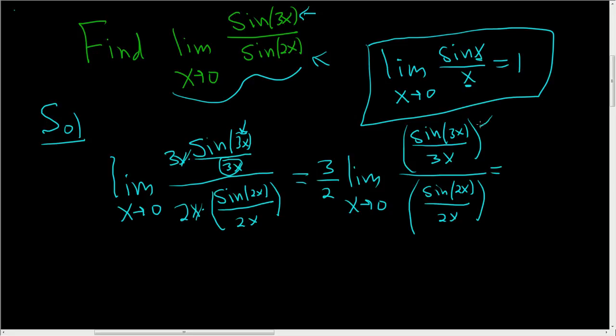This limit in the numerator is 1. This limit in the denominator is 1. So we get 3/2 times 1 over 1, which is just 3/2.